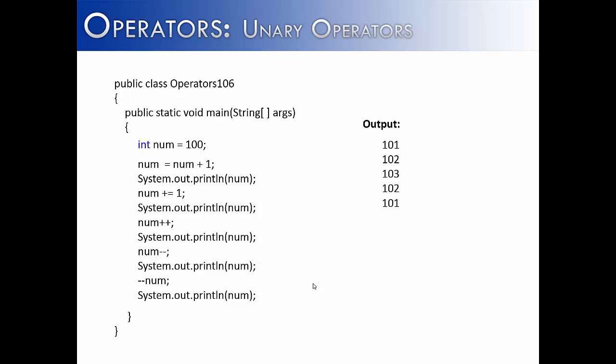If we were to go through this line by line, we would start with the value 100. And then we could say num is assigned to num plus one. And that would add one to 100. And so when we print it out, we would get the first value 101.